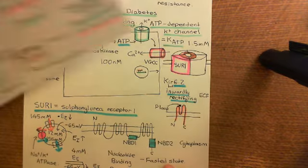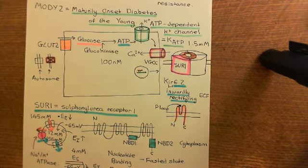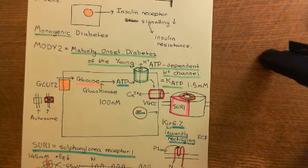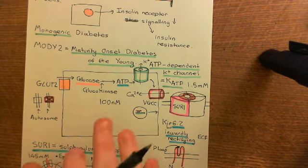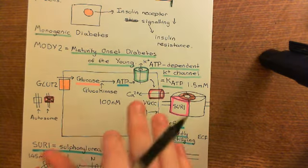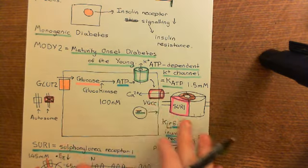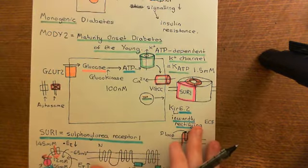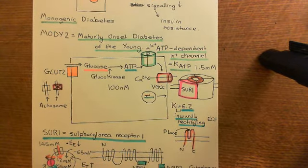That is specifically maturity onset diabetes of the young 2. There are other examples of MODY resulting from mutations in different proteins, but MODY 2 is quite a common form of MODY compared to some of the others.